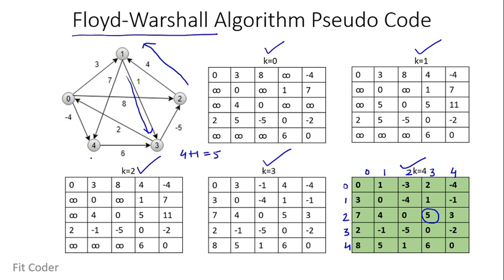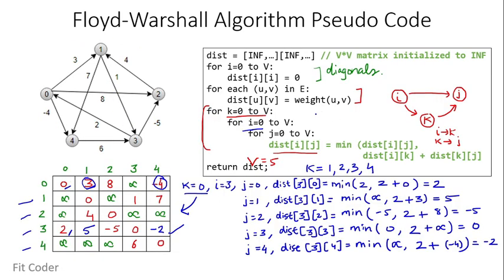Looking at the time complexity: there are three nested loops each running O(V), so the time complexity is O(V³). For space complexity, we create a 2D matrix of size V×V to store the minimum distances for each pair of vertices, giving a space complexity of O(V²).